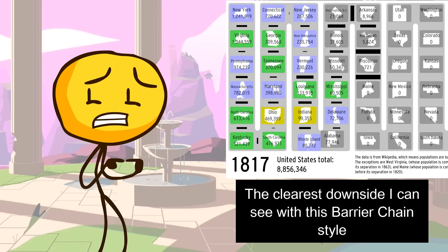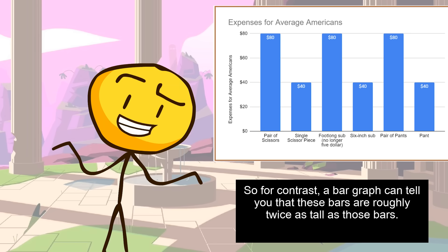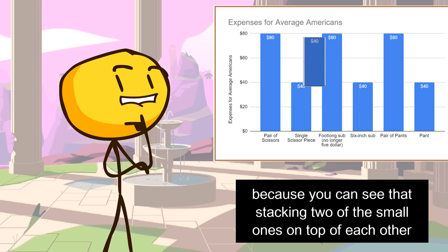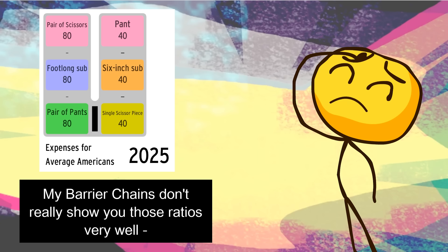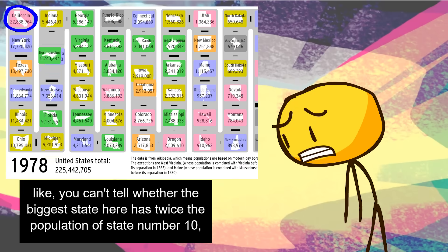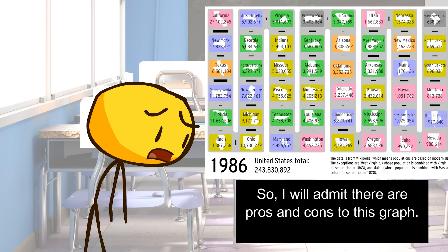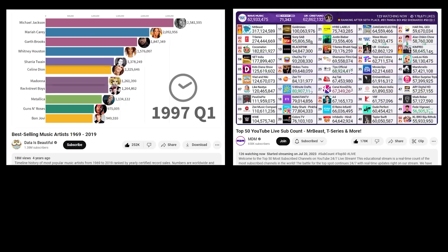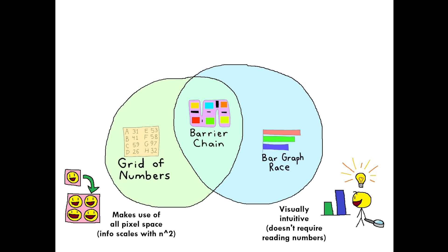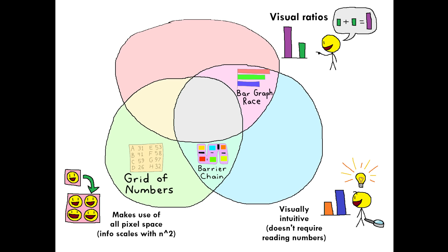The clearest downside I can see with the barrier chain style is that it's really bad at conveying ratios of values. A bar graph can tell you that these bars are roughly twice as tall as those bars, because you can physically see that stacking two small ones on top of each other takes the same space as one big bar. My barrier chains don't really show you those ratios — you can't tell whether the biggest state has twice the population of state number 10 or ten times the population. So there are pros and cons to this graph, but if our goal is just to meet the two requirements I listed, this one satisfies them in a way neither the bar graph race nor the grid of numbers could. If you wanted to add visual ratios as a third requirement, then nobody fulfills everything and we'd need to find another visualization.